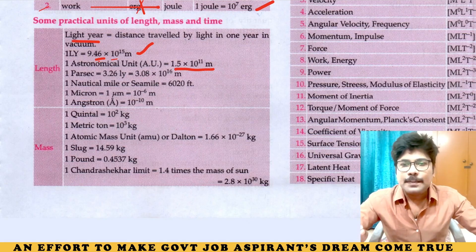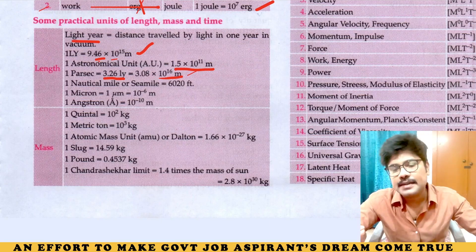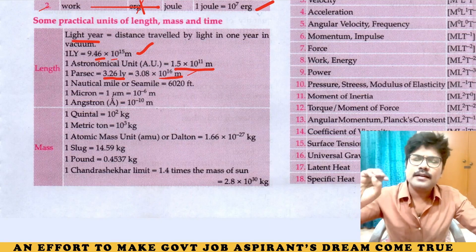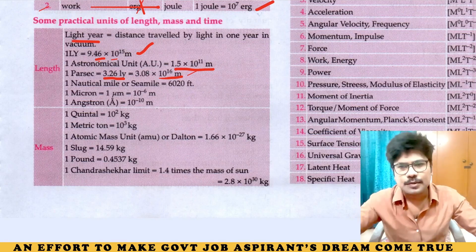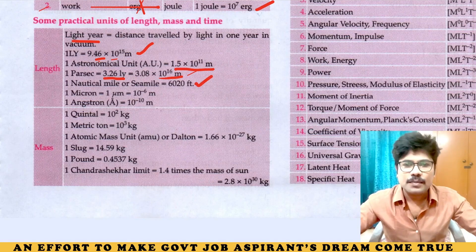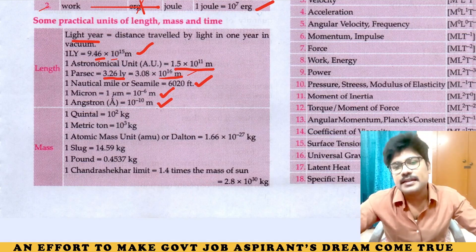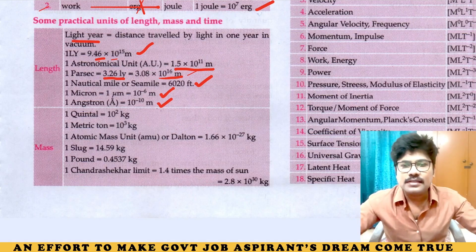1 parsec equals 3.26 light years or 3.08 into 10 to the power of 16 meters. These you should remember after two or three repetitions. 1 nautical mile equals 6020 feet. 1 micron equals 10 to the power of minus 6 meters. 1 angstrom is smaller than a micron — 10 to the power of minus 10 meters. These are all length units.